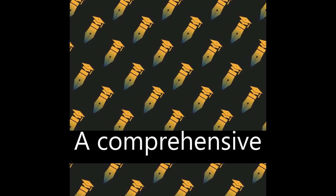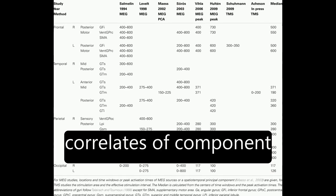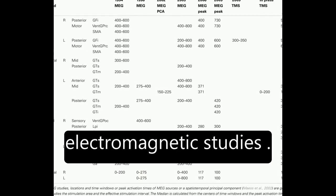A comprehensive meta-analysis by Indefray and Levelt, 2004, combined spatial information on neural correlates of component processes of word production with time course data from behavioral and electromagnetic studies.